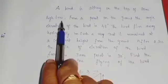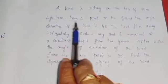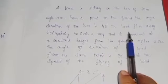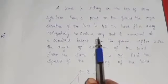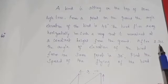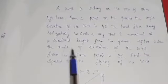Hi students, I am Kuthi, welcome to my session. A bird is sitting on the top of an 80 meter high tree. From a point on the ground, the angle of elevation of the bird is 45 degrees. The bird flies away horizontally in such a way that it remains at a constant height from the ground. After two seconds, the angle of elevation of the bird from the same point is 30 degrees. Find the speed of the flying bird.